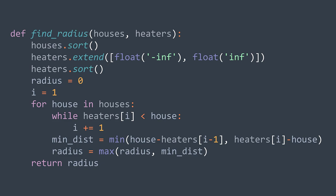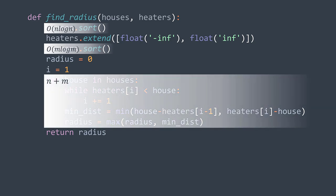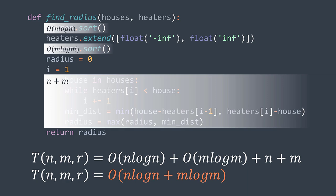For the time complexity, we have O(n log n) to sort houses and O(m log m) to sort heaters. For the loops, even though they are nested, the inner loop won't always do the same number of iterations — in total the inner loop does at most m iterations since each heater is traversed once, plus n iterations to traverse houses, giving O(n + m) for the loops. In total: O(n log n) + O(m log m) + O(n + m), giving O(n log n + m log m) time complexity. For space complexity it depends on the sorting function used.